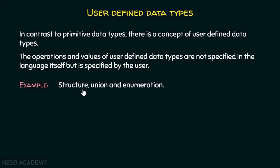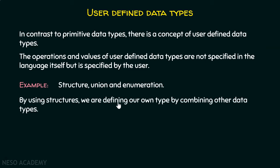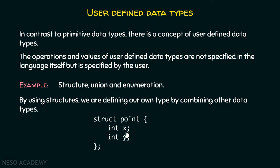Here are the examples: structure, union, and enumeration, which we have already discussed. By using structures, we are defining our own type by combining other primitive types. For example, we can combine two integers to form a new type called point. So, it is a user defined data type.